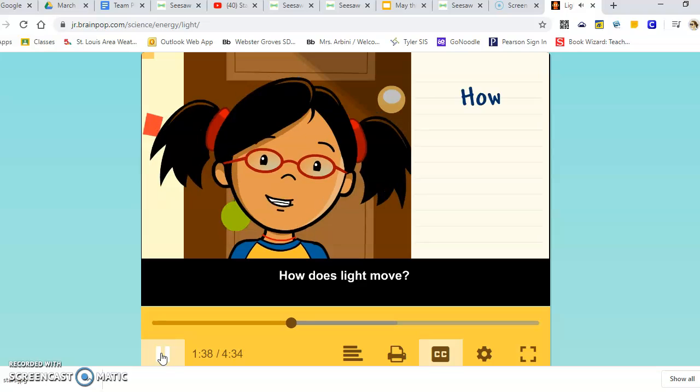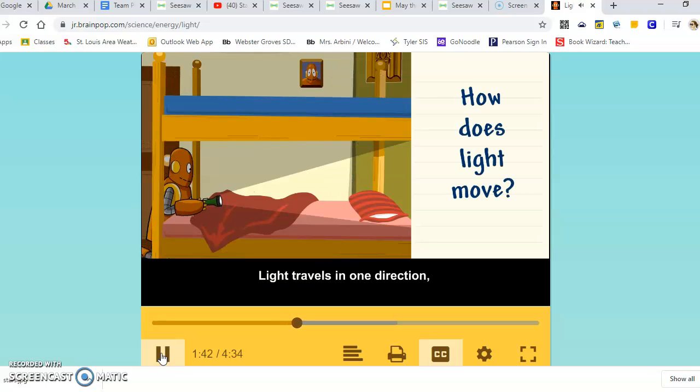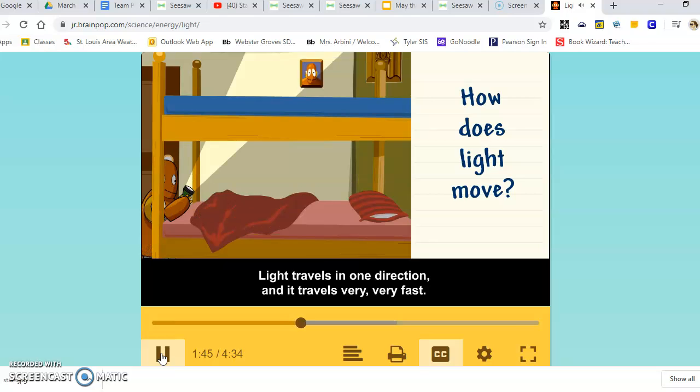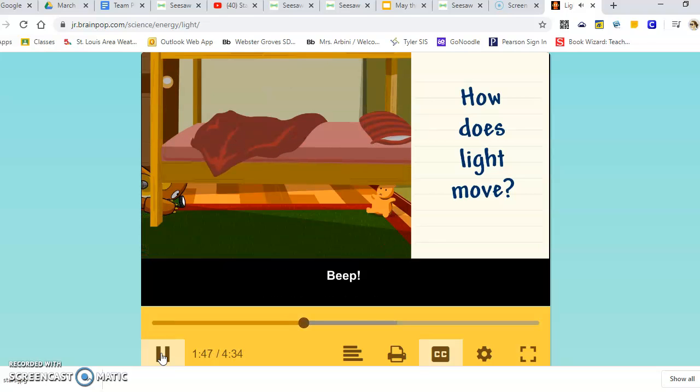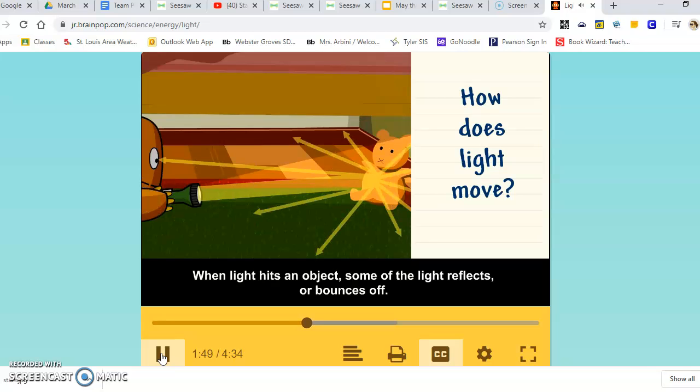How does light move? Light travels in one direction, and it travels very, very fast. When light hits an object, some of the light reflects, or bounces off. Some of that light bounces back to your eye so you can see the object.